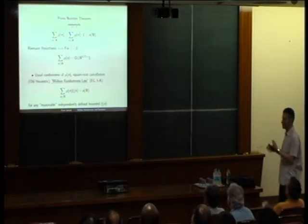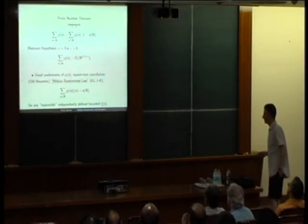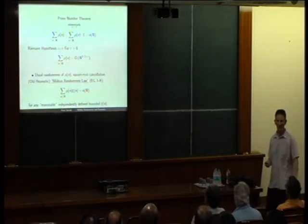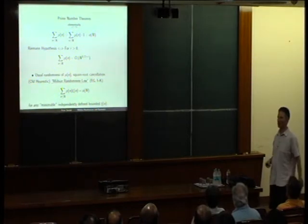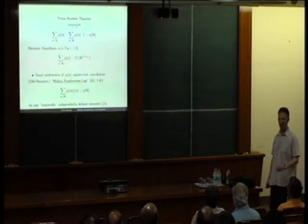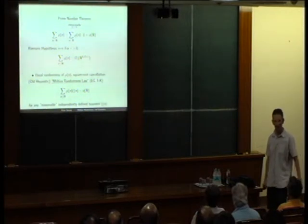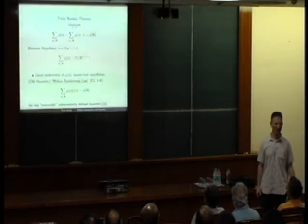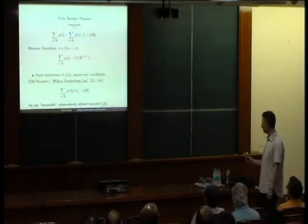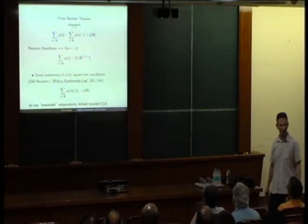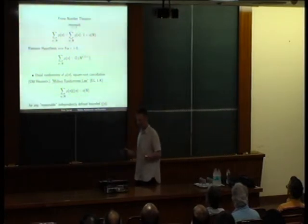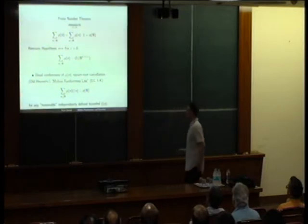There are millions of papers written about the randomness of Möbius in connection with this cancellation. To make it graphic: suppose I'm a drunkard walking on the integer lattice, and instead of flipping a coin at each step, I look at mu(n) — if it's one I move right, minus one I move left, zero I stay put. After a long walk, the Riemann hypothesis says I'll be about sqrt(N) from the origin, which is exactly what you'd expect if you were a true drunkard.